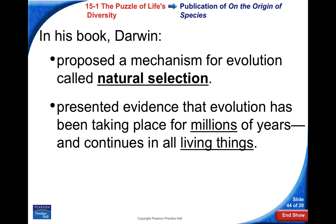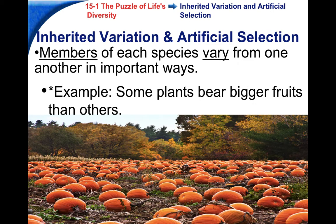At this time, a lot of people thought the earth was only a couple thousand years old, and Darwin was saying evolution has been happening for millions and millions of years and is continuing right now in all living things, including human beings. He was actually afraid to talk about human evolution because he feared the backlash.